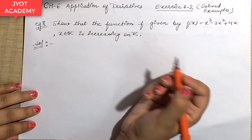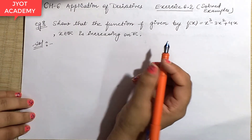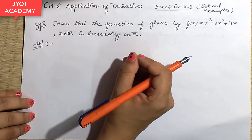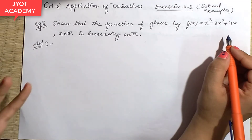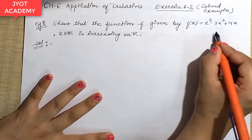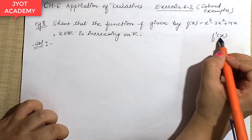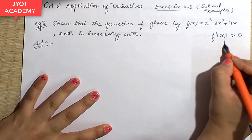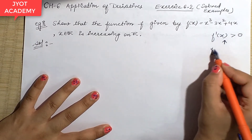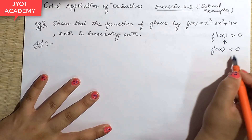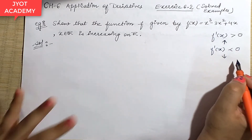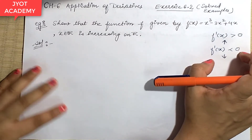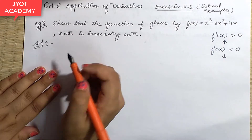Hello students, welcome back to my YouTube channel. Continuing from solved examples for Exercise 6.2, let's see Example 8. In this exercise, the method I use is: when you differentiate the function, if its value f'(x) is greater than 0, that means it's an increasing function, and when f'(x) is less than 0, it means it's a decreasing function.